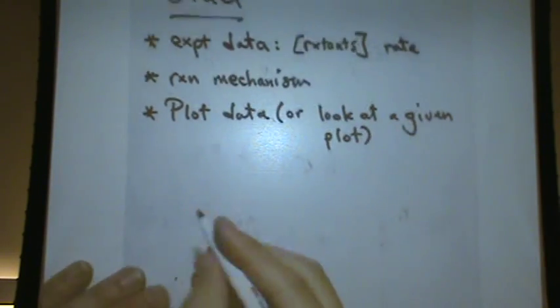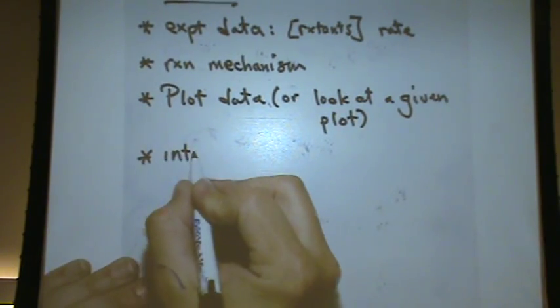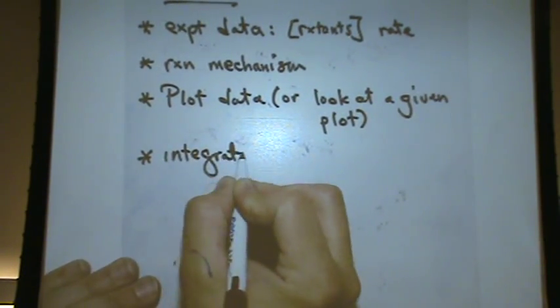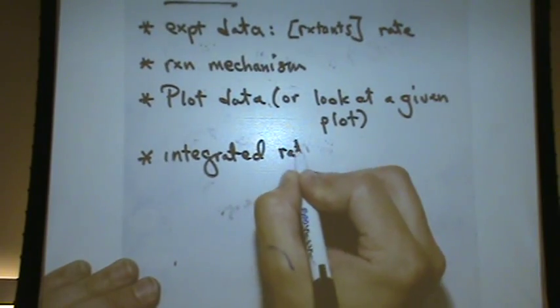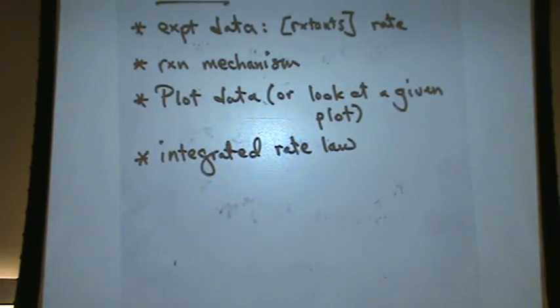Kind of a not normal way, but another way can be to use the integrated rate law. This would be sort of a funny way to be given this problem. But if you're given all the information for an integrated rate law - the initial concentration, the concentration at time t, and the rate constant - you can put it all to the equation.